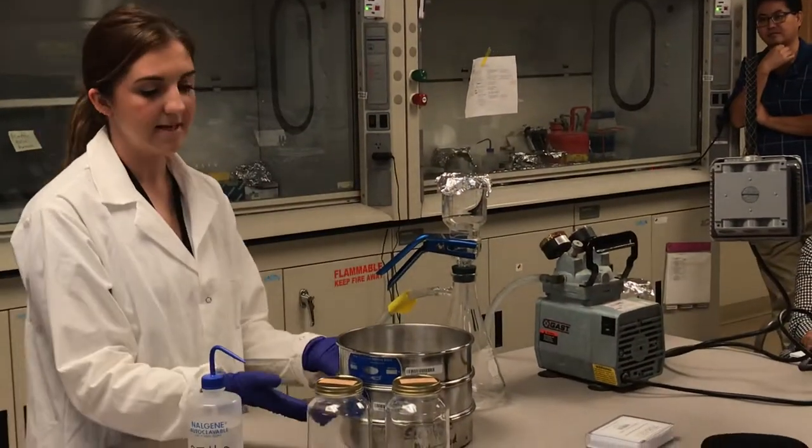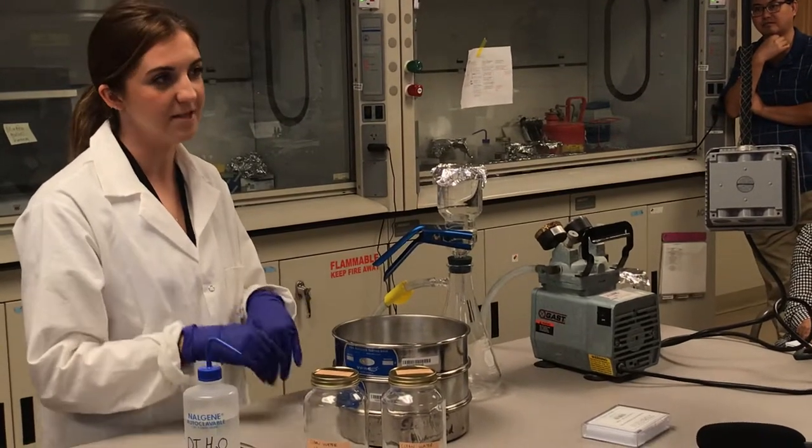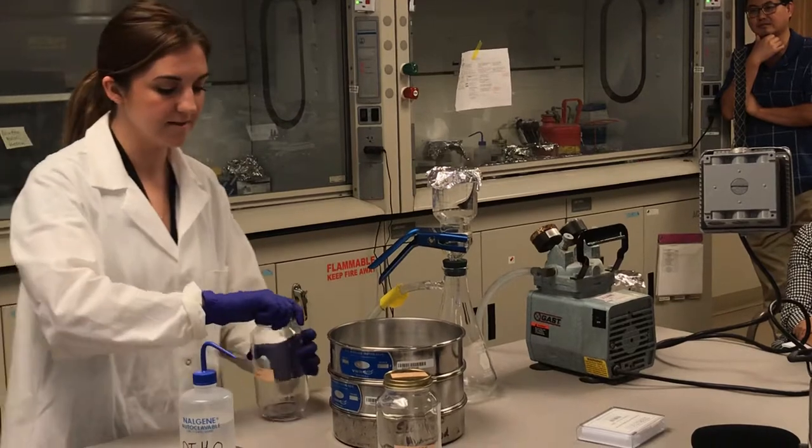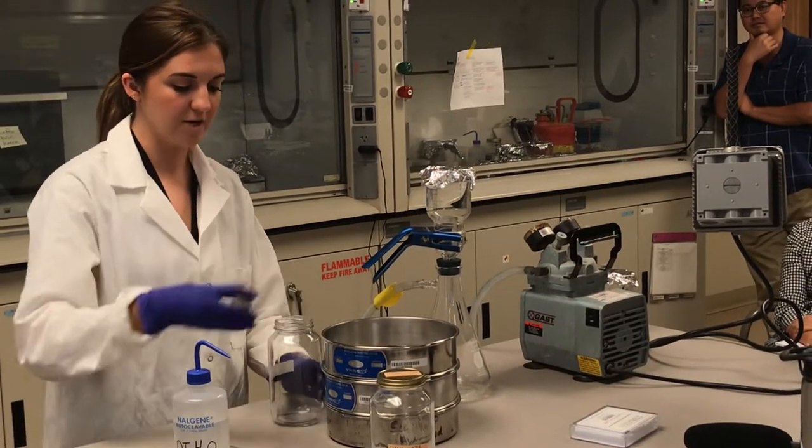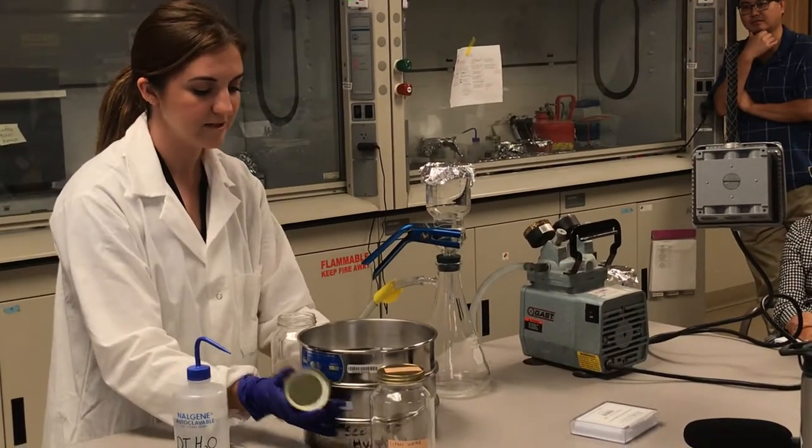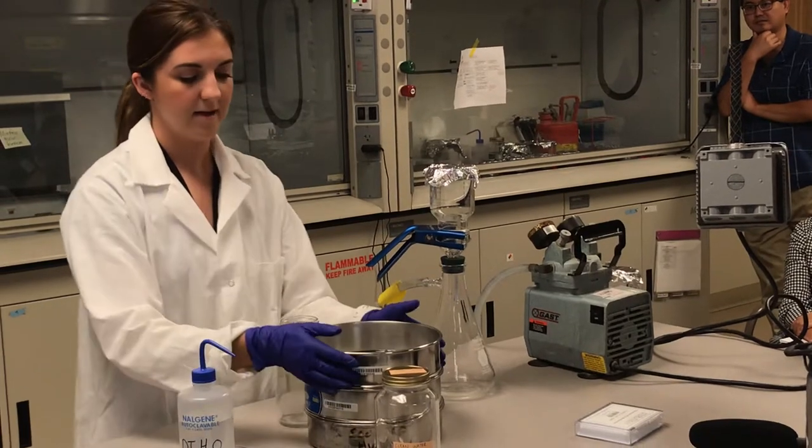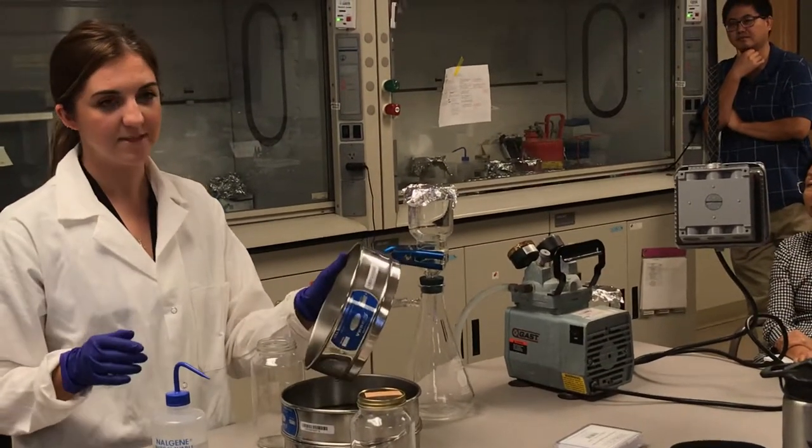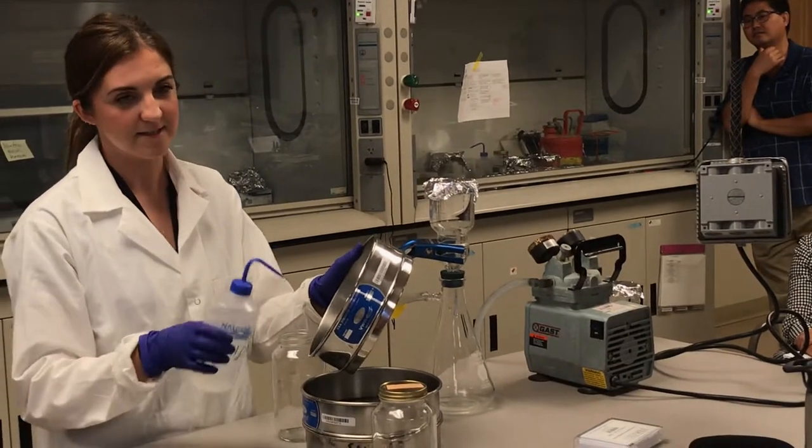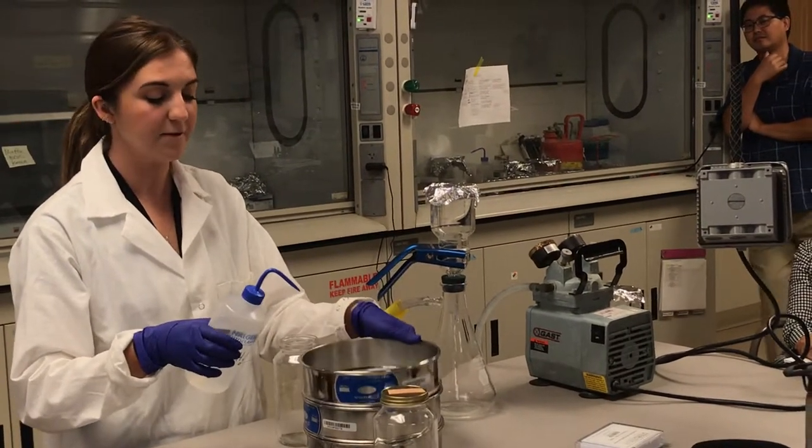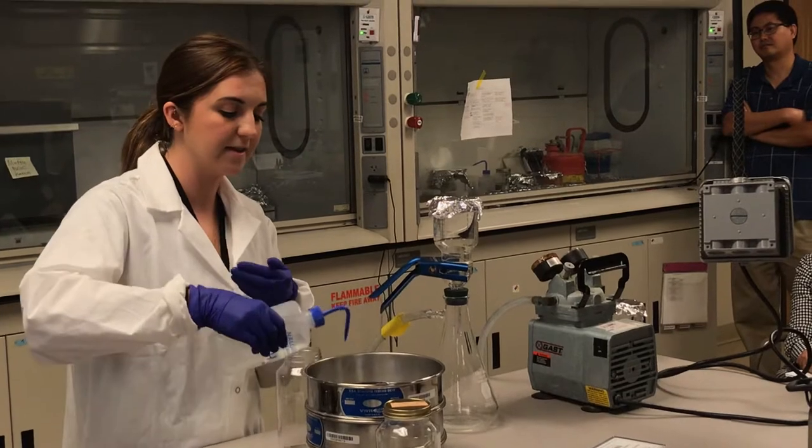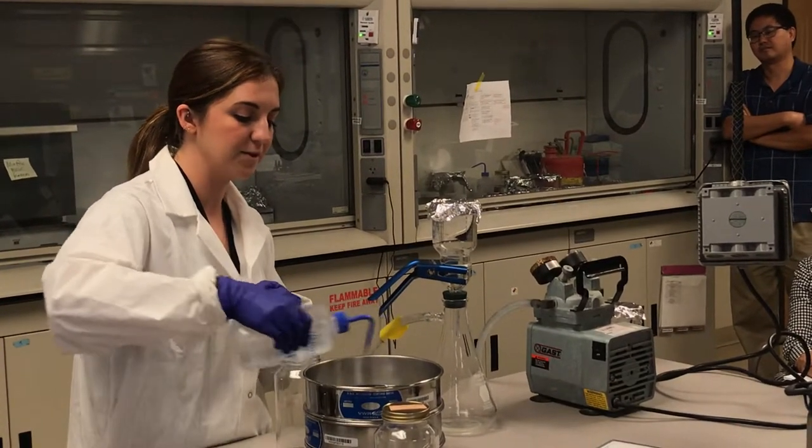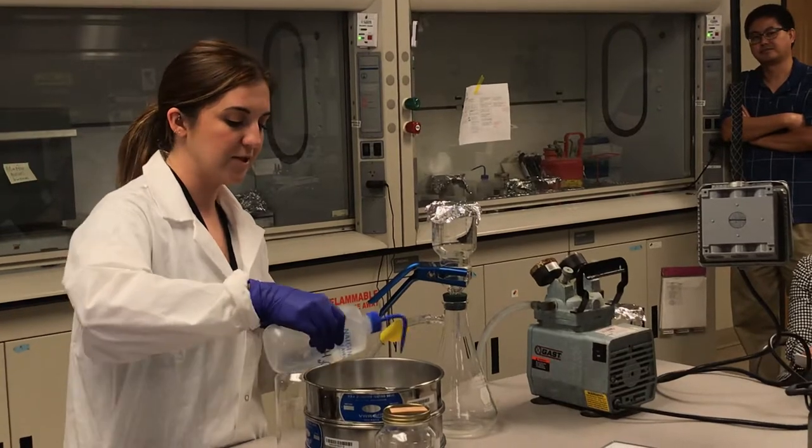And then the next step would be to rinse the contents of each sieve into a sample jar. So I'm going to do the largest size fraction first. Unscrew your jar and place it as close to your sieve stack as you can. And then what you need to do is hold your sieve as vertically as possible and you need to rinse the sieve. Actually before I do this, I would probably make sure that everything has gone through. So I'd give the actual flat sieves a little bit of a rinse with your squirt bottle. Make sure everything goes through.